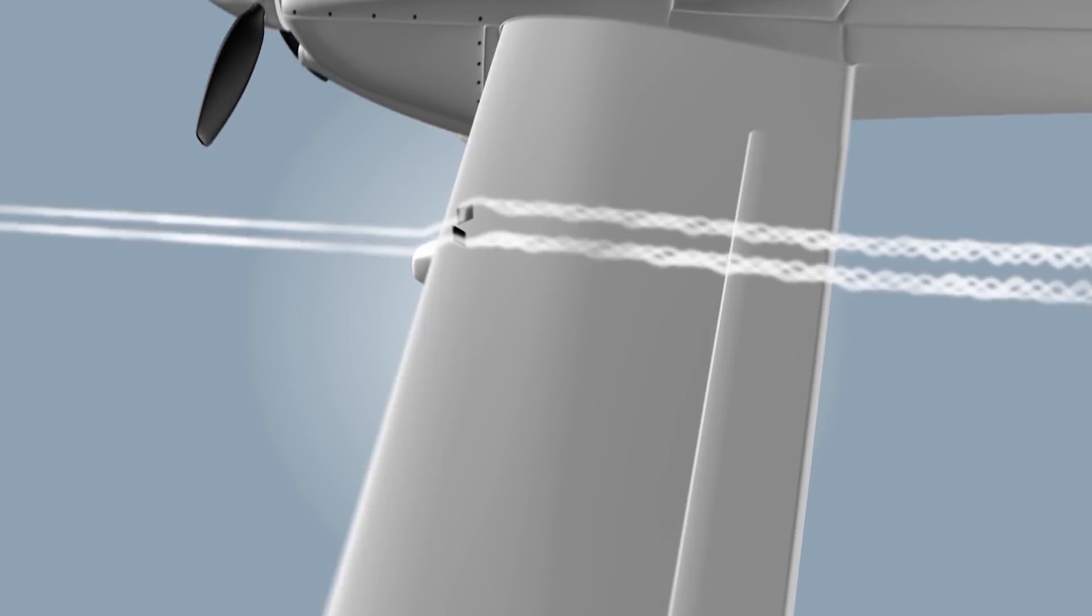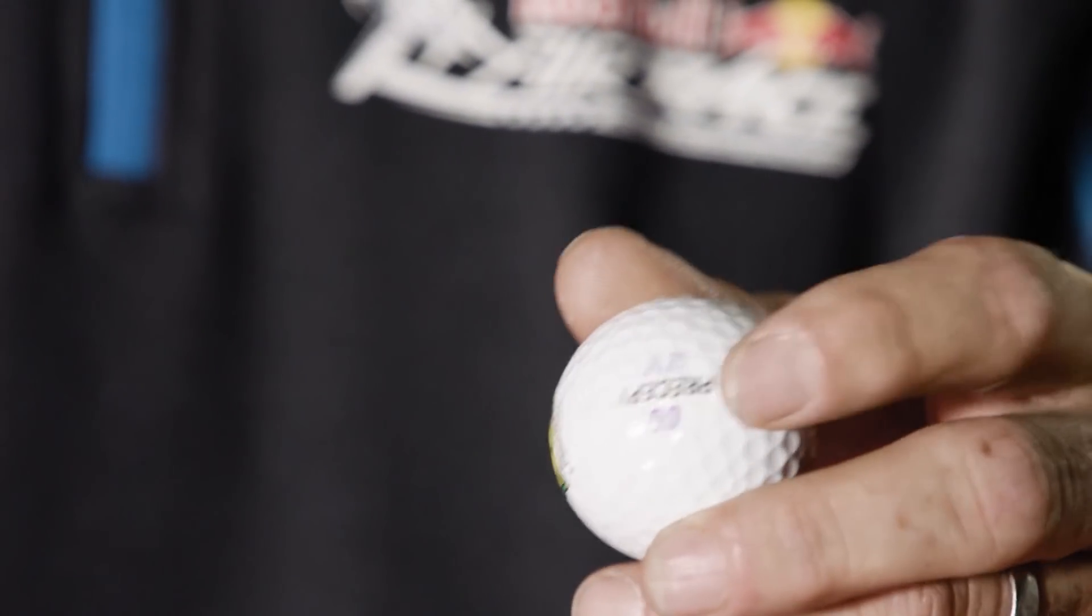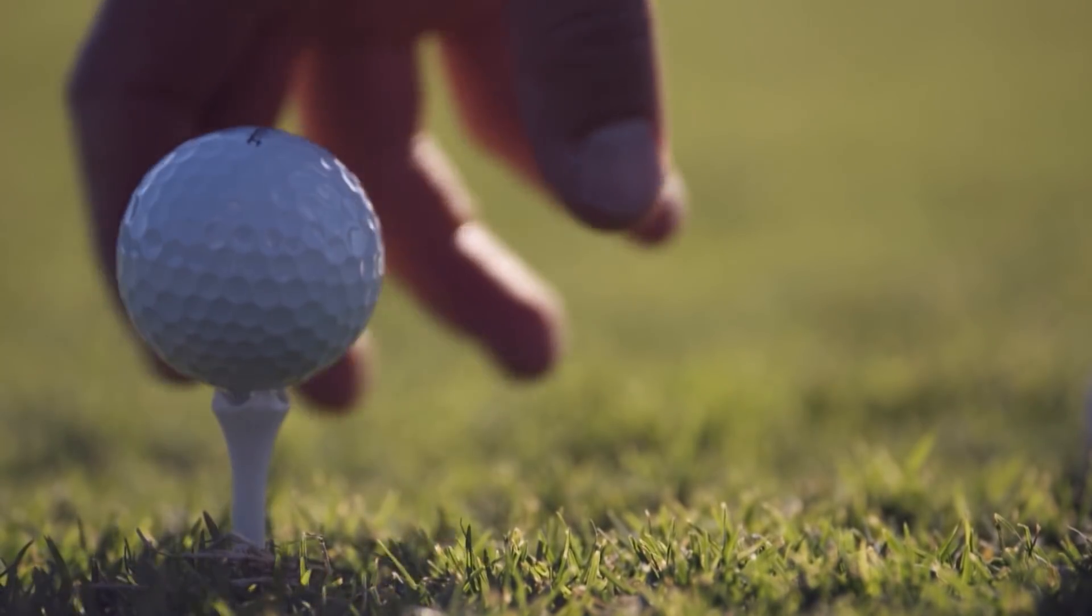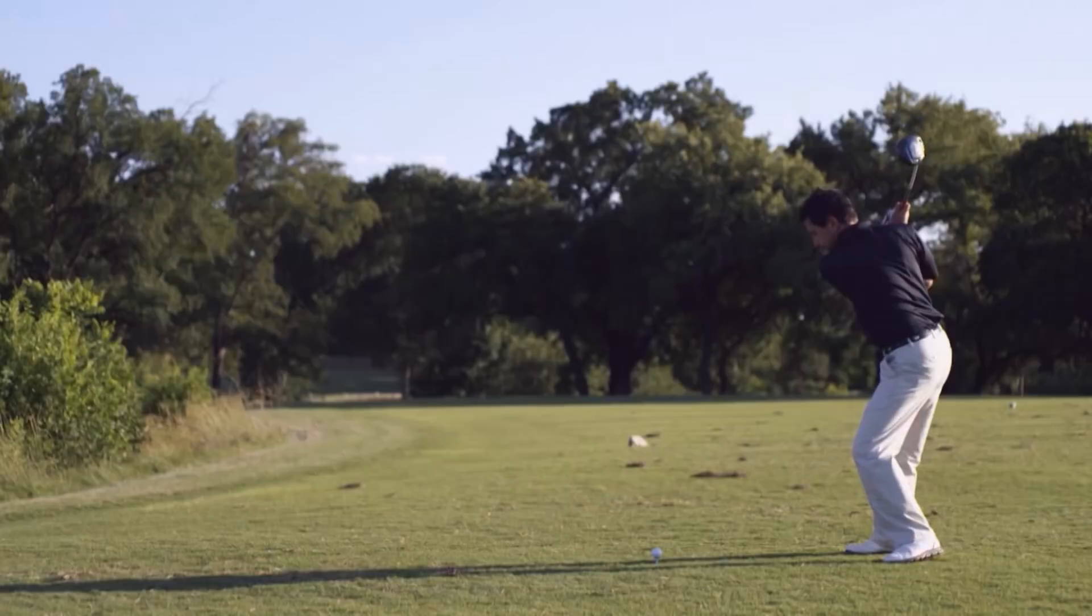One great example of this principle is a golf ball. The dimples on the surface of the golf ball are vortex generators. They create a turbulent flow on the ball, which is more drag than the laminar flow, but it's far less drag than separated flow. This allows the ball to fly much further in the air.